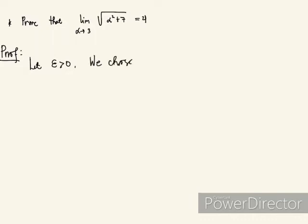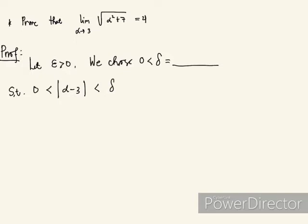And then we choose delta. Your delta is greater than 0 and this is equal to something we do not know yet. Such that, using the aid of this accumulation point, we will have the inequality: the absolute value of alpha minus 3, this is less than delta and greater than 0.